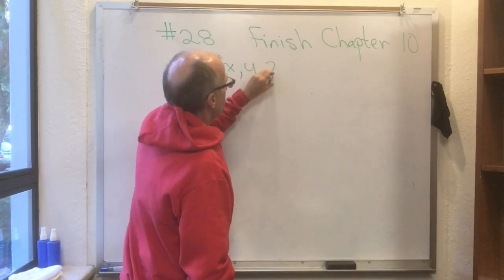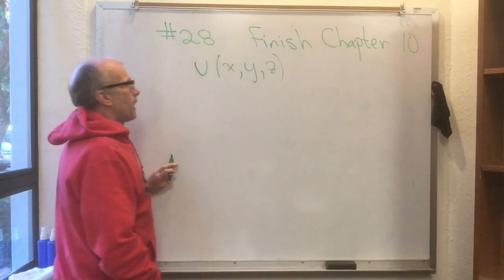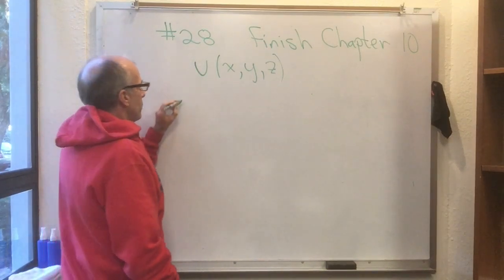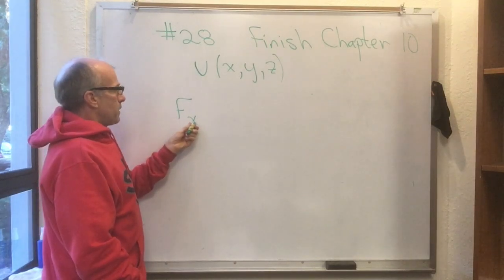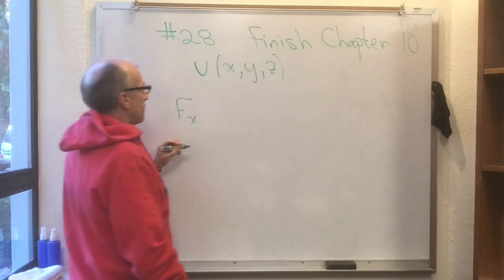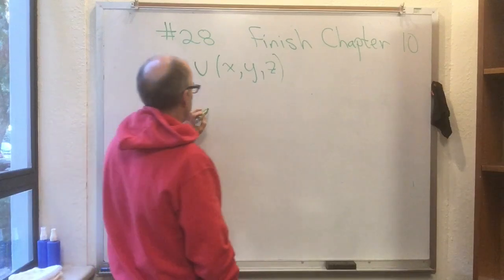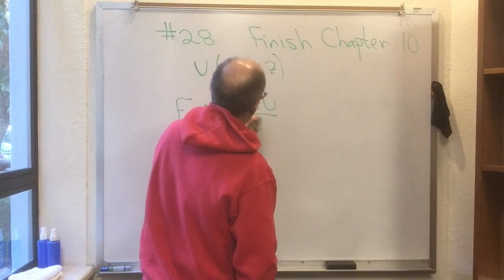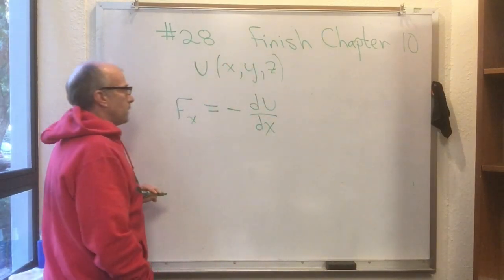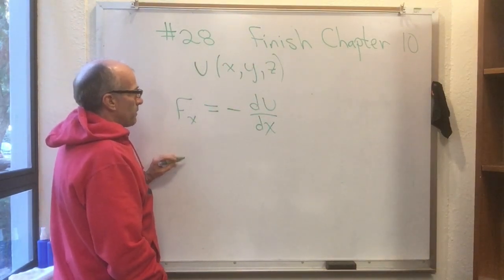We now know that you can get F sub x, the x component of the force that's associated with this potential, by taking minus dU/dx. And similarly if this is a three-dimensional problem you can get Fy by taking minus dU/dy.